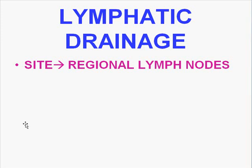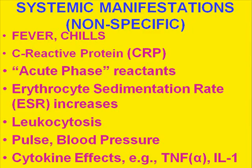Here are some of the systemic manifestations of acute inflammation: fever, chills, C-reactive protein, acute phase reactants, increase in erythrocyte sedimentation rate — whether using the Wintrobe or Westergren method — leukocytosis or neutrophilia, increase in pulse, increase in blood pressure, and cytokine effects like fever and pain. In other words, all of the things that aspirin is supposed to help treat.